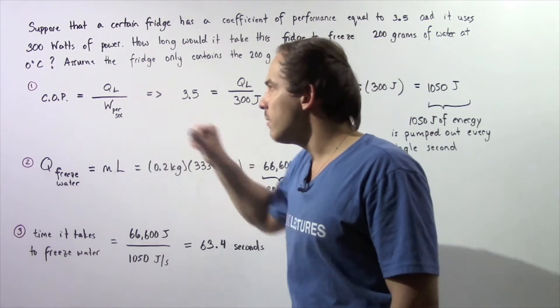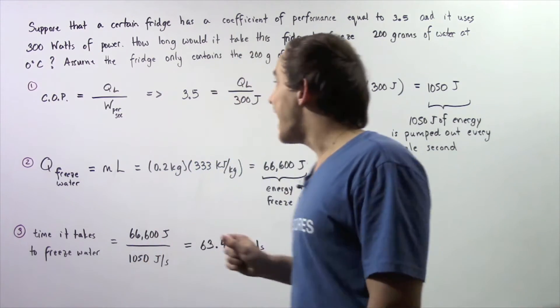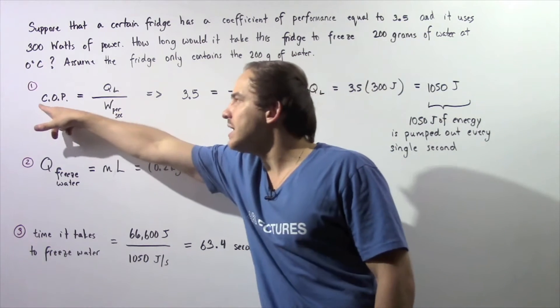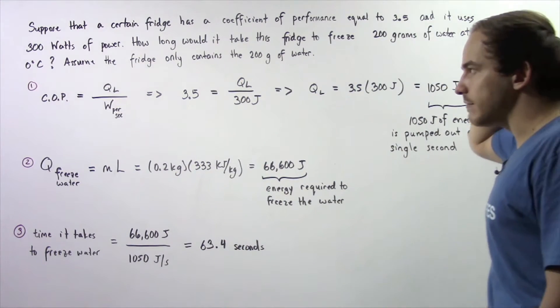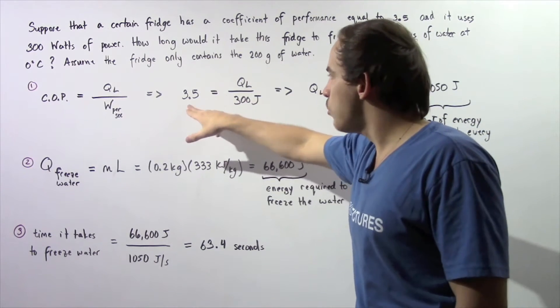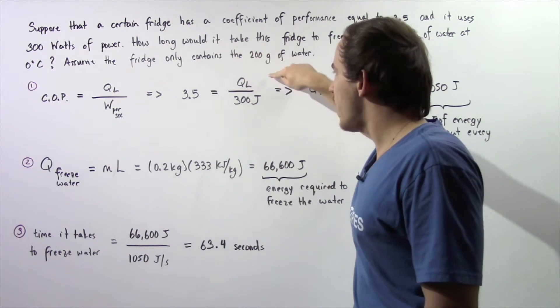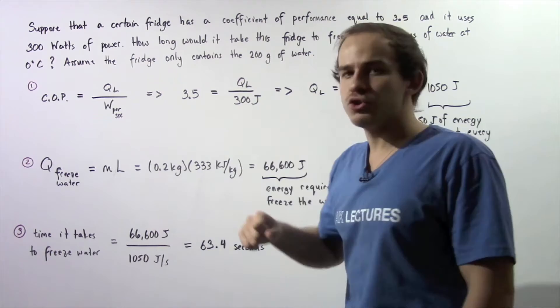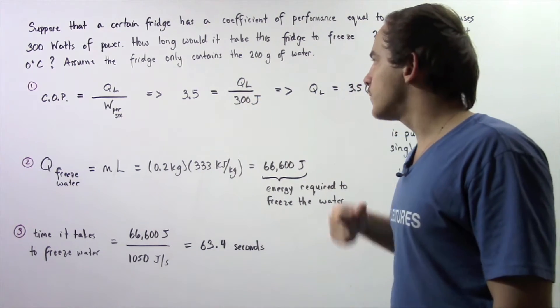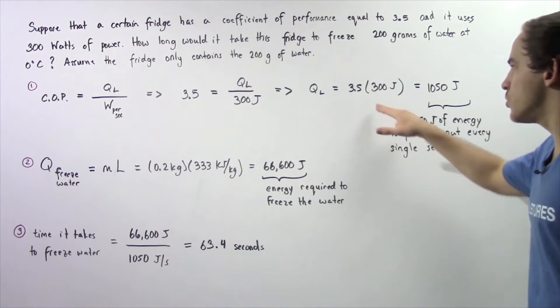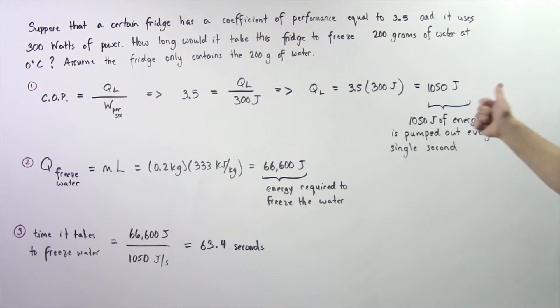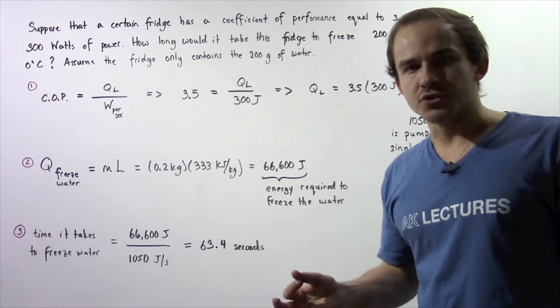Now we know that W is simply 300 joules and we know that our COP, our coefficient of performance, is given to be 3.5. So we have 3.5 is equal to QL divided by 300 joules. So we can solve for our QL and we find that QL is equal to 300 joules multiplied by 3.5 and that gives us 1050 joules.